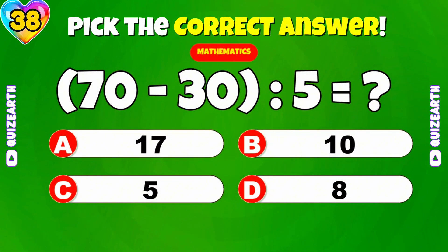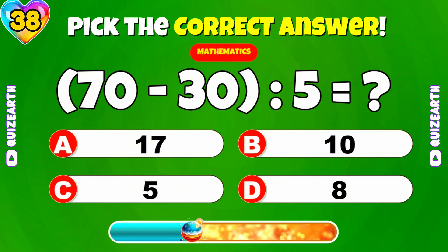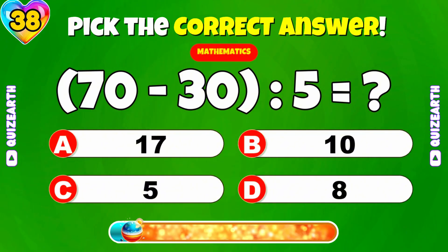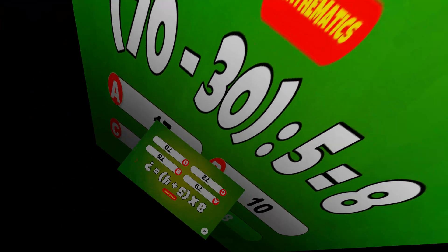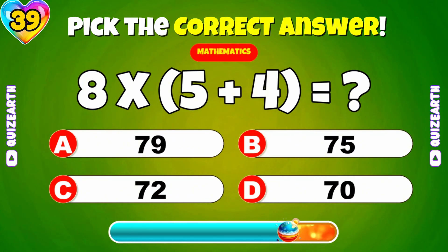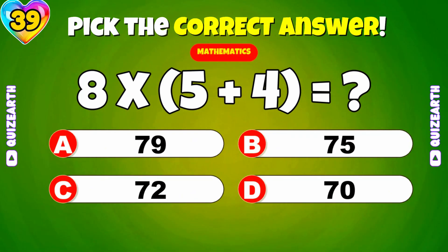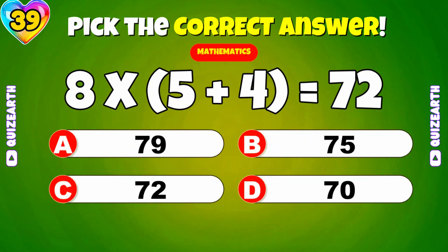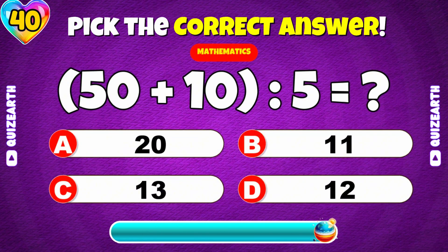80. What is 70 minus 30 divided by 5? 8. What is 8 times 5 plus 4? 72. What is 50 plus 10 divided by 5? 12.